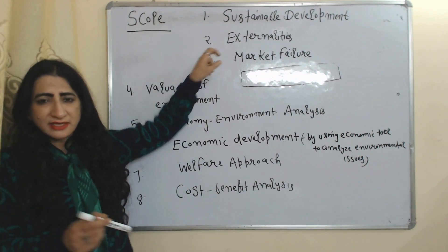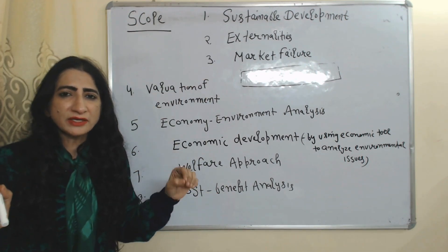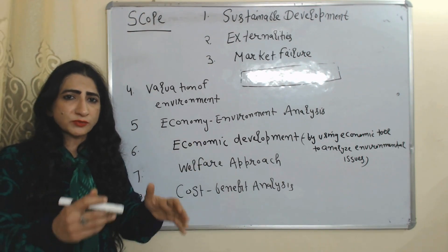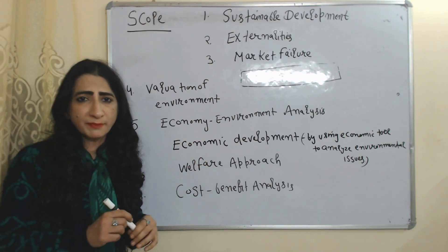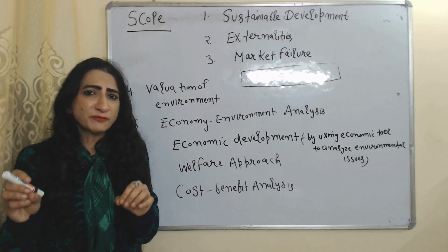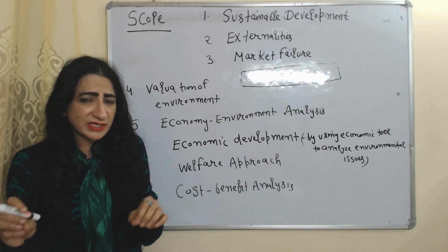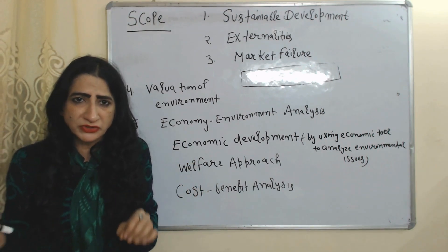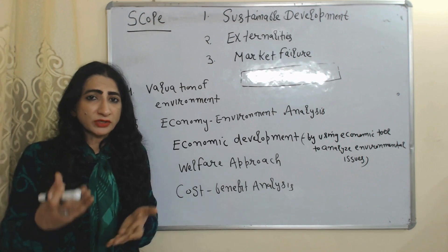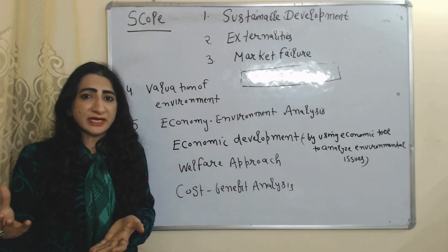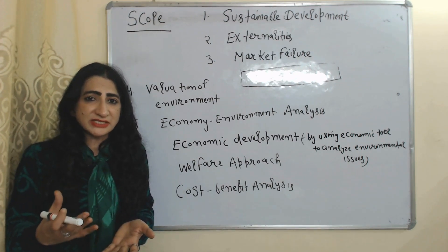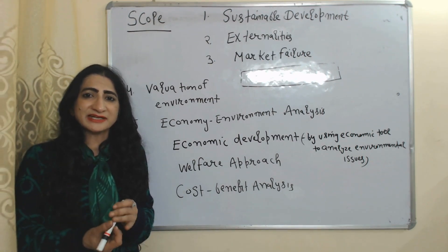Externalities. Externalities means when your activities generate profit or loss for unrelated persons. For example, your manufacturing activities are a cause of environmental pollution — this will be called negative externalities. In order to prevent negative externalities, environmental economics suggests subsidies and taxes.